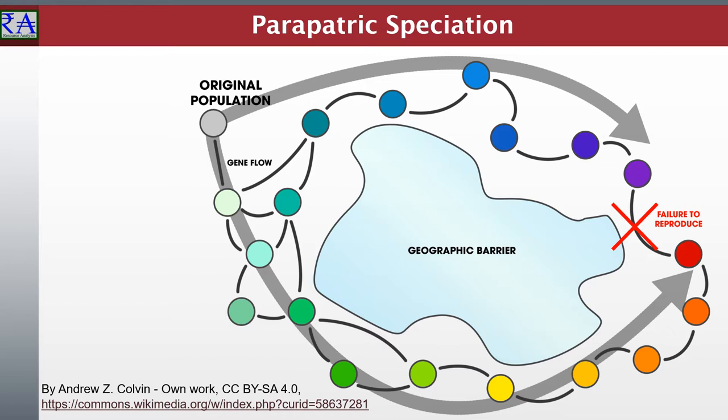Reduced gene flow of peripatric speciation often produces a cline in which a variation in evolutionary pressures causes a change to occur in allele frequencies within a gene pool of each differentiating population. This is enabled through environmental gradients that ultimately results in genetically distinct sister species. This is peripatric speciation.